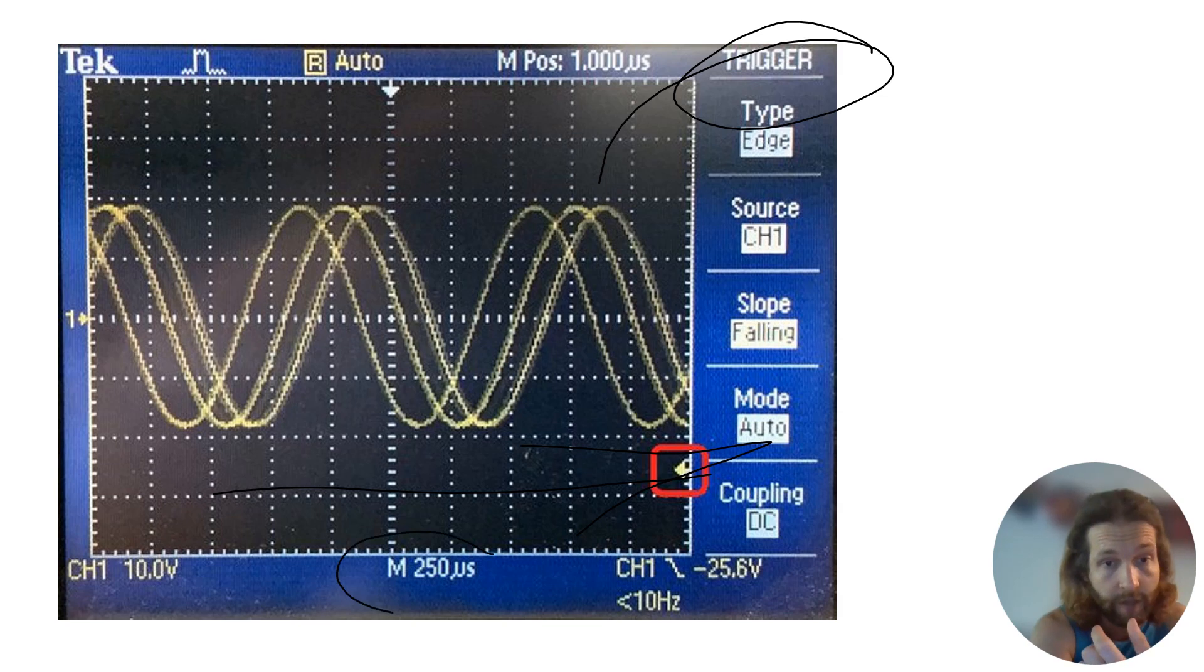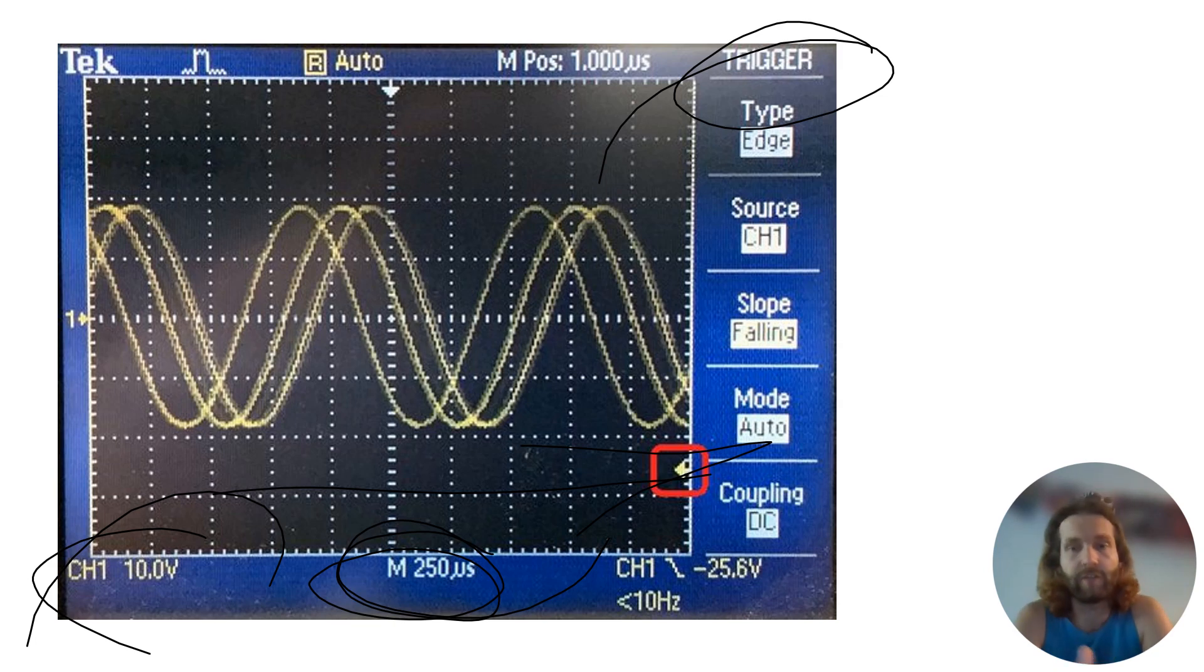And get into, okay, here we've got 250 microseconds for the division and we've got 10 volts for the other division. So we can stop it, we can start to make some determinations about this wave and actually analyze it, because that's the point of using this tool, the oscilloscope.